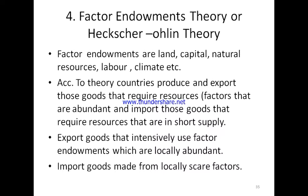Factor endowments include land, capital, natural resources, labor, and climate — all these are your endowments or gifts. According to this theory, a country should produce and export only those goods that require resources which are abundant in that country.